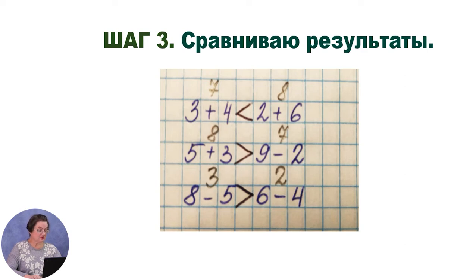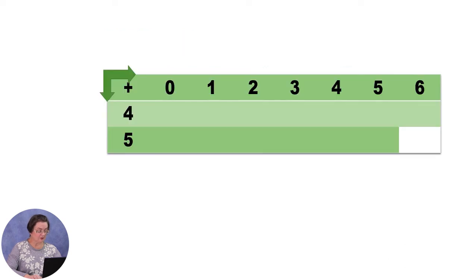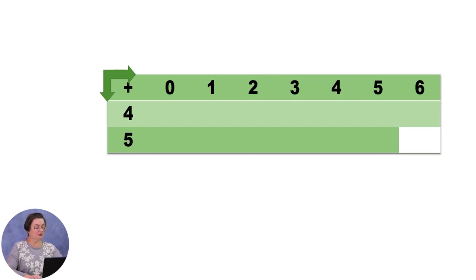Иногда примеры записывают необычным способом — в таблице. Как решать такие примеры? Сейчас разберём. В первой таблице числа записаны в верхней строке и в левом столбике. В верхней левой ячейке знак «плюс». Это значит, что каждое число верхней строки надо сложить с первым числом второй строки и результат вписать в пустую ячейку.